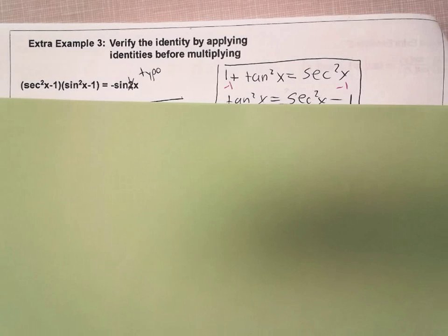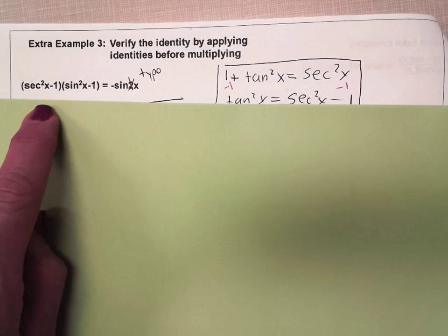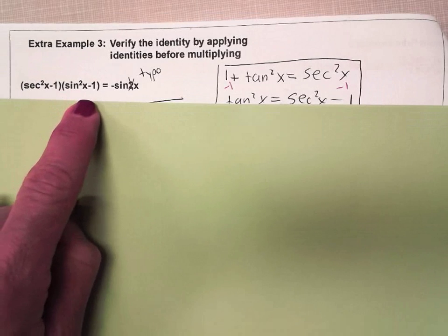In this example, you might think you need to FOIL because you have two binomials in parentheses, here and here.